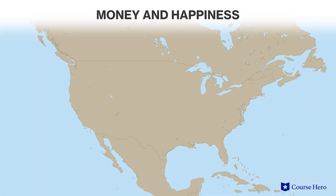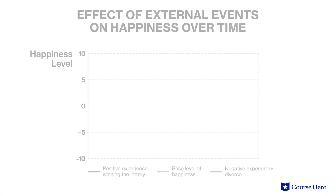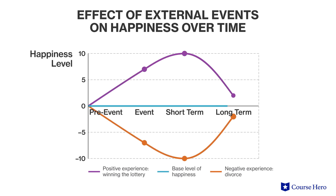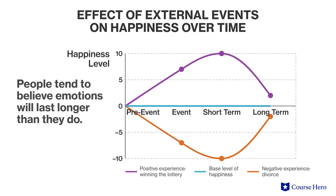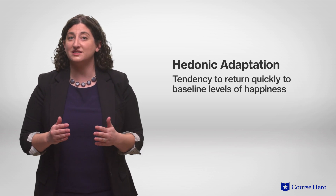If this surprises you, it doesn't actually surprise psychologists, because it turns out that we're all pretty bad at predicting what will make us happy. For example, in the United States, people often believe that having more money will make them significantly happier. However, research shows that this isn't true — when people have enough money to meet basic needs and buy a few luxuries, wealth isn't a strong predictor of happiness. People also do a poor job of predicting future emotions; whether a situation is positive or negative, they tend to believe that the resulting emotions will last longer than they actually do, like thinking they would be happy forever if they won the lottery. In reality, people display hedonic adaptation — the tendency to return quickly to baseline levels of happiness after positive or negative events.